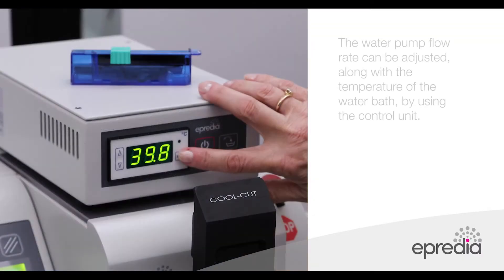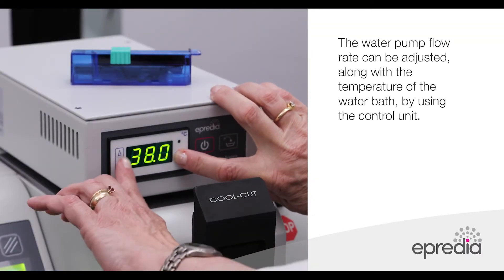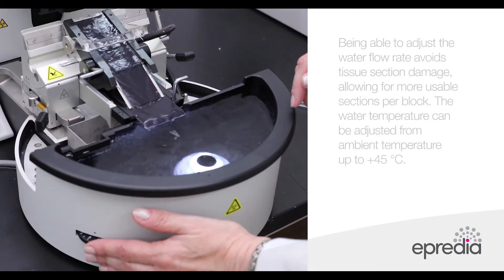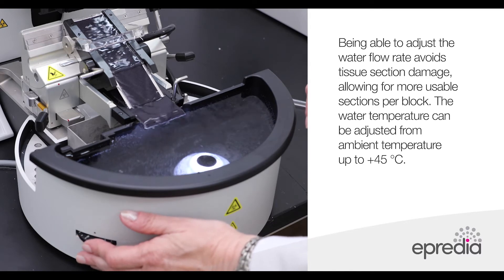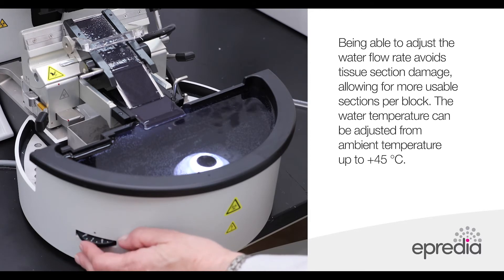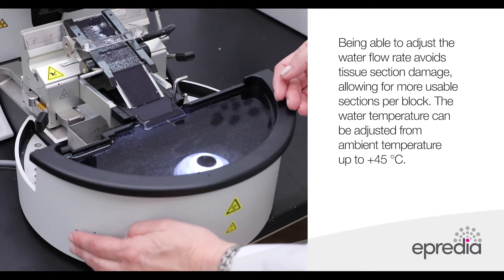The water pump flow rate can be adjusted along with the temperature of the water bath by using the control unit. Being able to adjust the water flow rate avoids tissue section damage, allowing for more usable sections per block. The water temperature can be adjusted from ambient temperature up to 45 degrees Celsius.